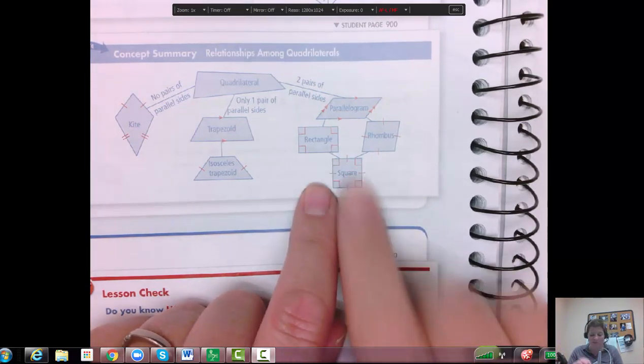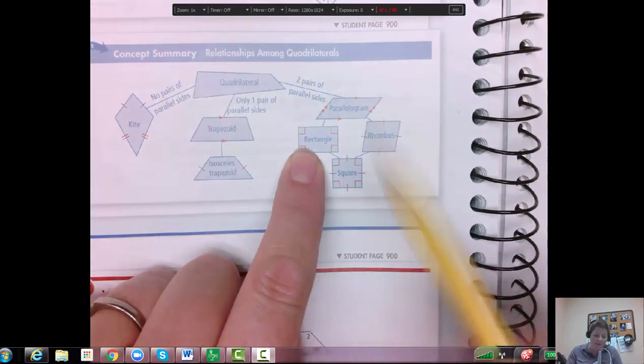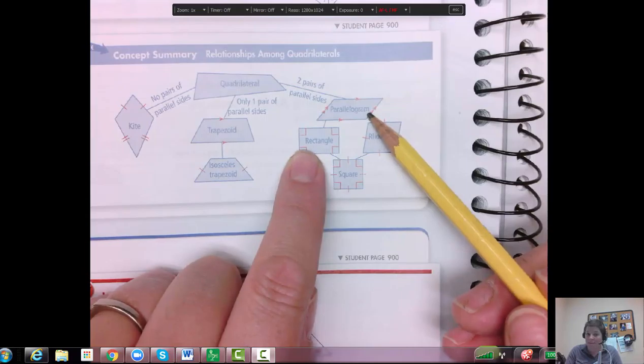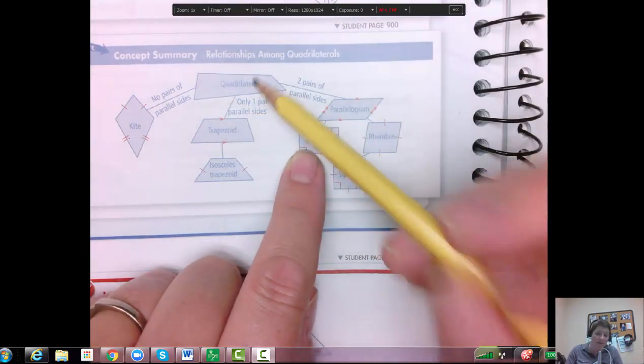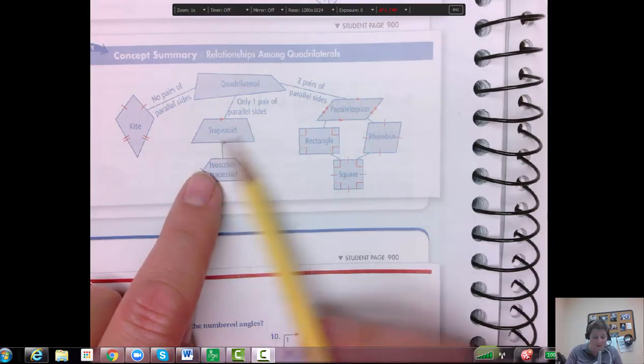So if I have a rectangle, that rectangle is also a parallelogram, it's also a quadrilateral. Kind of the same here. Isosceles trapezoid is also a trapezoid, and it's also a quadrilateral.